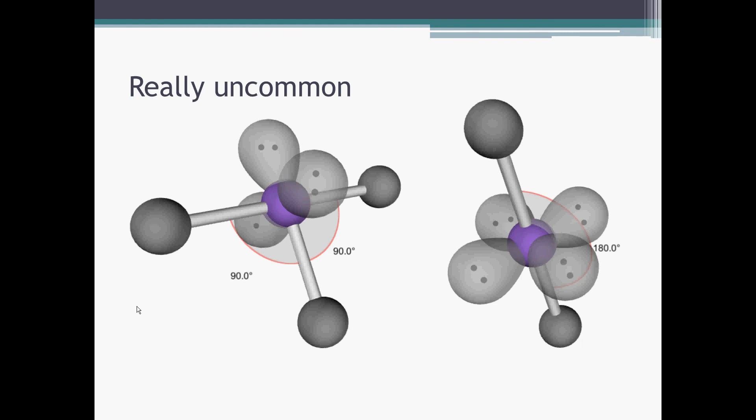Less common are the T-shaped or linear SP3D2 molecules. And that concludes our discussion of hybrid orbitals and the shapes that are generated as we look at the connections between bonded atoms and the electron domains around them, taking into account non-bonding pairs and how they affect the shape of the overall molecule.